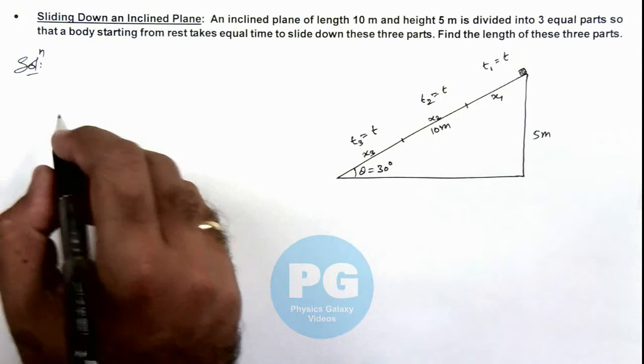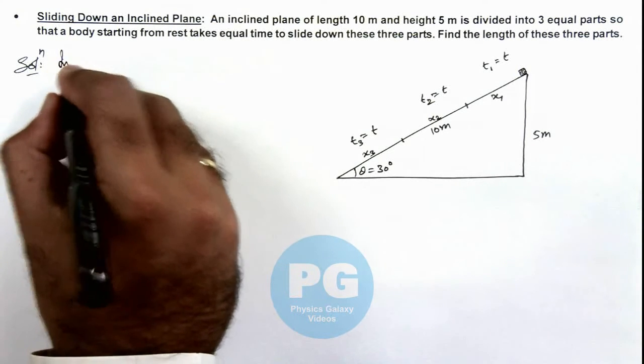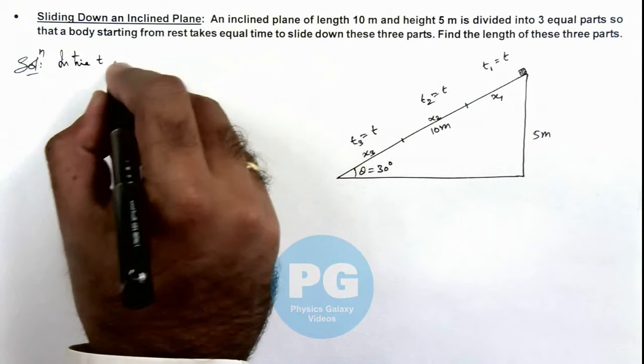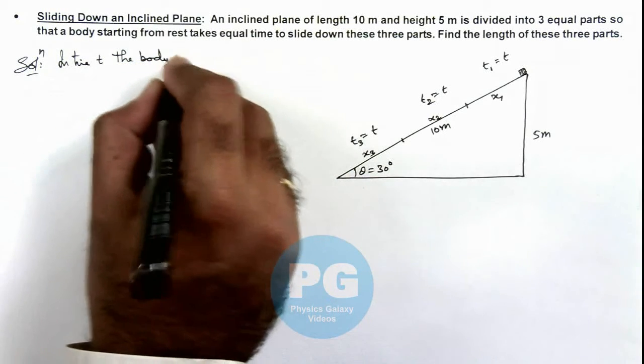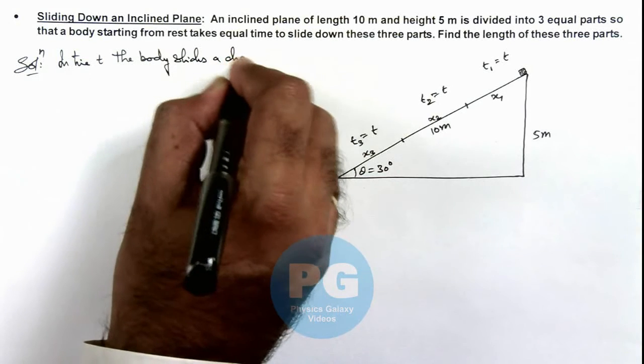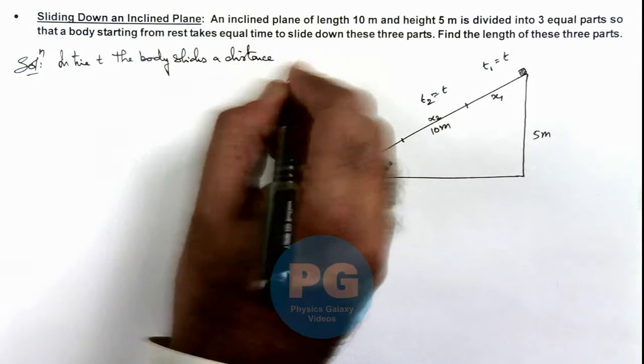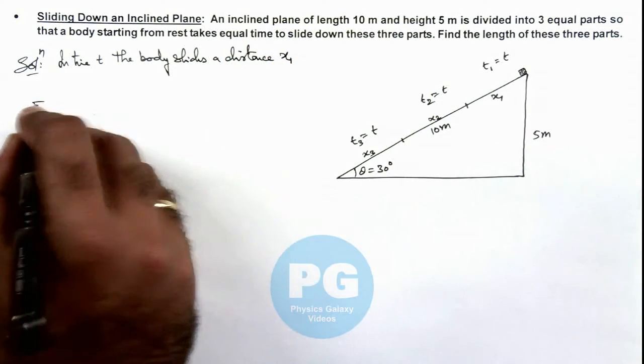So in this situation here we can write, in time t, the body slides a distance x1. This implies